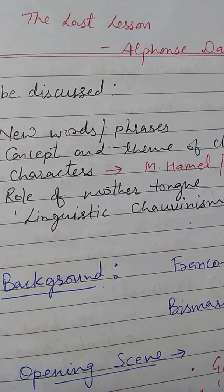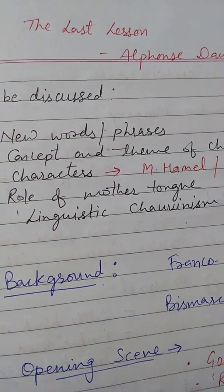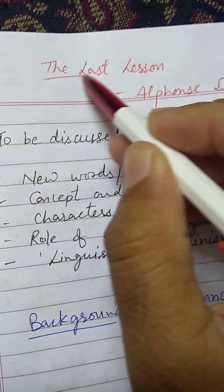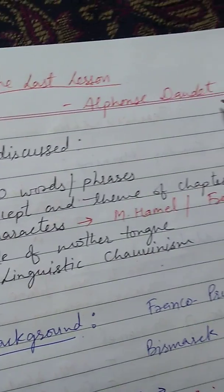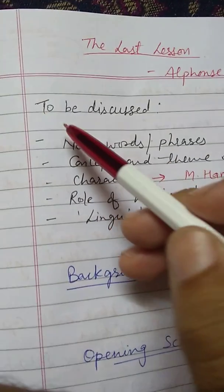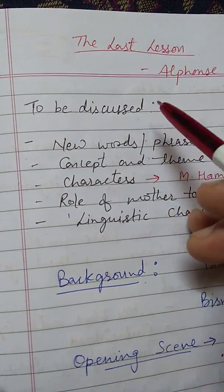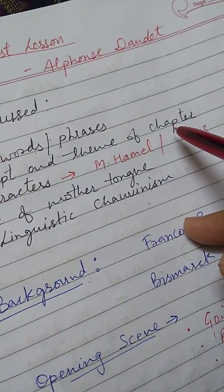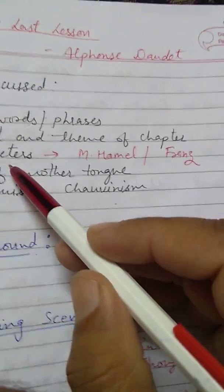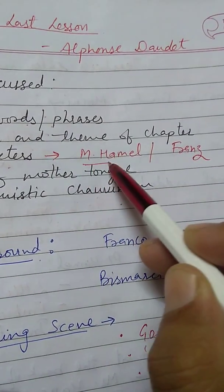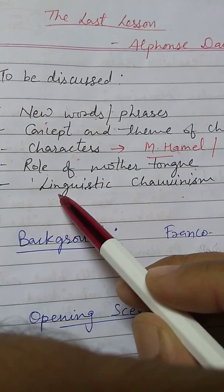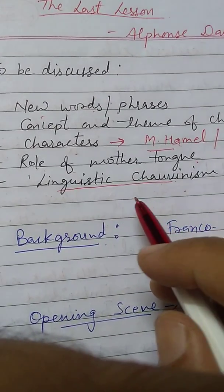Good morning students. Today we will study the very first chapter of the Flamingo book, 'The Last Lesson' by Alphonse Daudet. In this chapter we will learn new words and phrases, the concept and theme, and the characters — the two main characters being M. Hamel and Franz, the teacher and the student. We will also cover the role of mother tongue and the phrase 'linguistic chauvinism.'